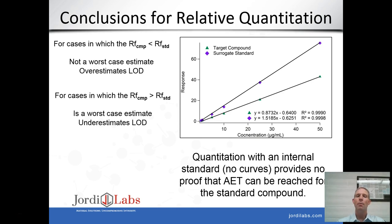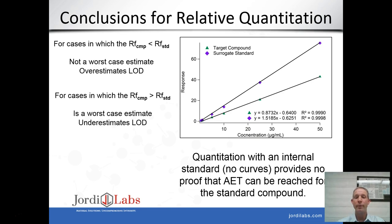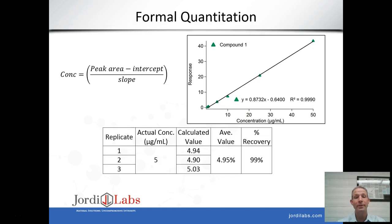In conclusion for relative quantitation: if the response factor for a compound is less than that of the surrogate standard, we will get a worse estimate of concentration, potentially underestimating how much is present, and also overestimating the LOD — possibly failing to detect at the toxicologically relevant threshold, i.e., the AET or analytical evaluation threshold. For cases where the response factor of the compound is greater than the surrogate's, we get a worst-case estimate and underestimate the LOD. The gold standard is formal quantitation using an actual standard of the compound of interest, which is preferred but not always possible due to the unavailability of commercial standards for oligomers, side products, and other non-commercially available extractable species.